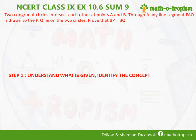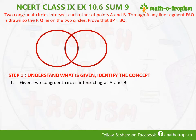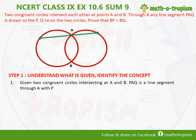Understanding what is given and identifying the concept. Given are two congruent circles intersecting at A and B, which means we have two circles of equal radius. PAQ is a line segment through A with P and Q lying on the circles.